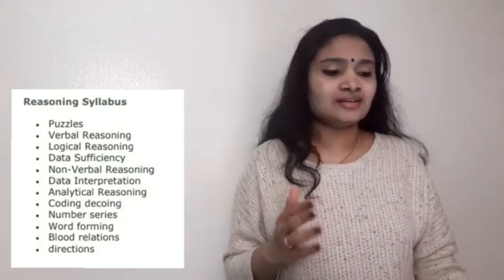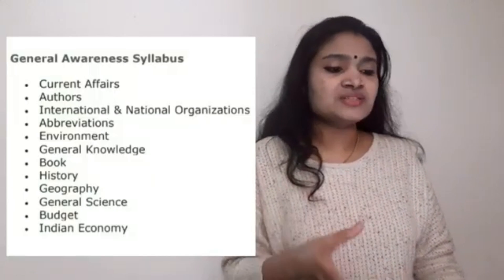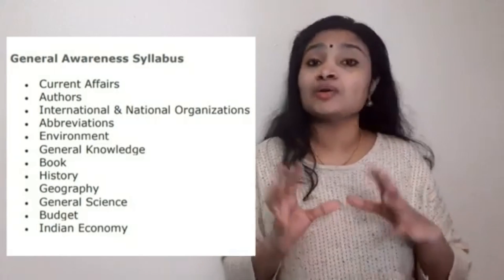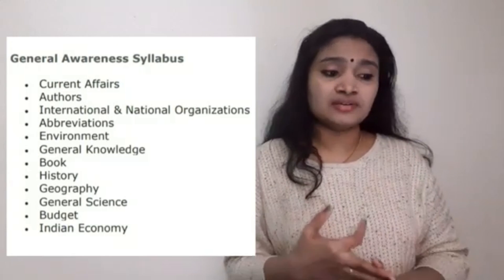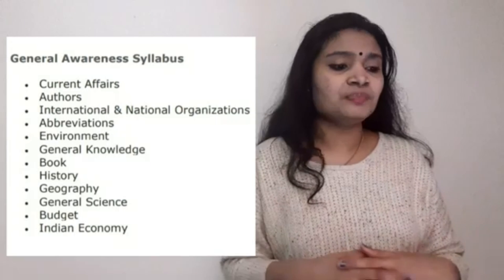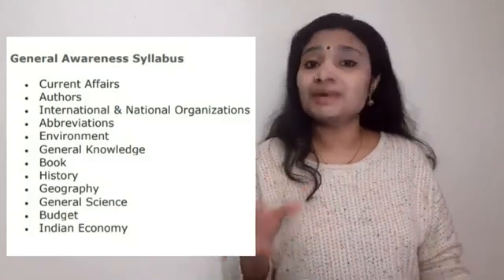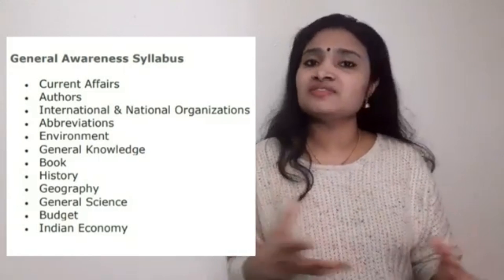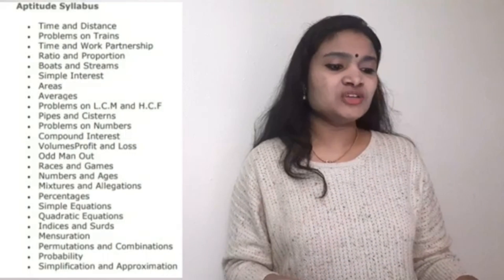Next is the general awareness syllabus. It is not just general awareness — it also comprises current affairs. From this area you have to cover current affairs, authors and books, international and national organizations and their headquarters, abbreviations, environmental related questions, general knowledge, history, geography, general science, budget, Indian economy related questions, and awards and films. These are very important areas from the general awareness section.